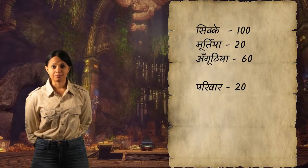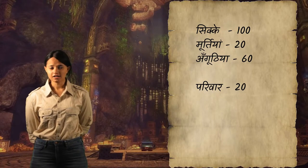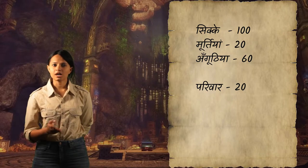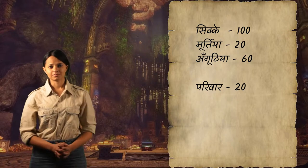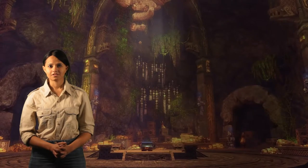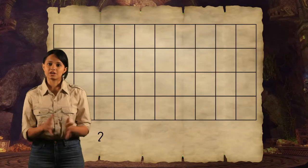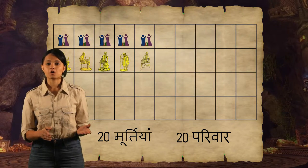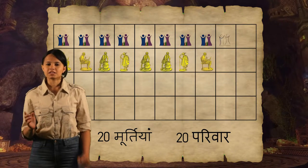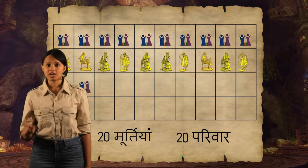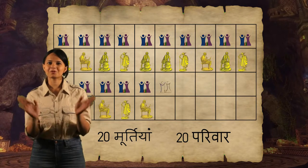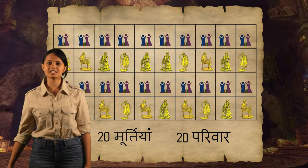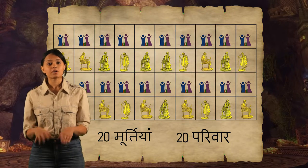100 सिक्के, 20 मूर्तियाँ और 60 अंगूठियाँ मिली हैं, और हमारे गाँव में 20 परिवार रहते हैं। चलो पहले मूर्तियों का हिसाब लगा लेते हैं — हमारे पास 20 मूर्तियाँ हैं और 20 परिवार, मतलब हर एक परिवार को एक-एक मूर्ति दे दी तो हो गया समान बटवारा। अरे वाह, ये तो आसान था!